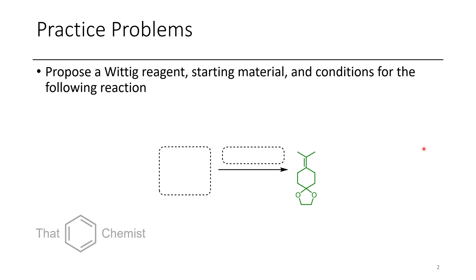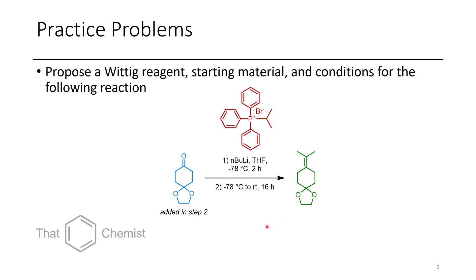Before we get into that, let's go through the practice problems assigned last lecture. In this problem, I'd like you to propose a Wittig reagent, a starting material, and conditions to get the following alkene. The conditions I would have used is this cyclohexanone-containing ketal. This could be derived from a 1,4-dione — we've just monoprotected it — and can then undergo a Wittig reaction to get an alkene on the corresponding carbon at the 4-position. You could also unmask this and get the ketone back if you wanted to do further chemistry.